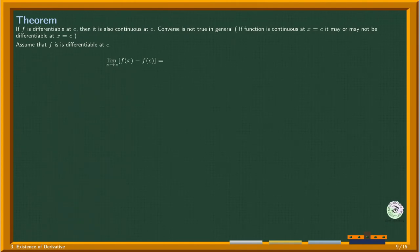We will use a trick here. Multiply f(x) minus f(c) by h over h, where h is x minus c.